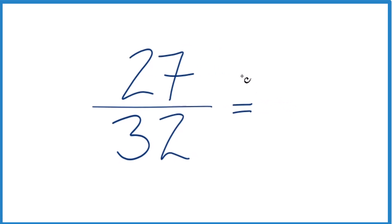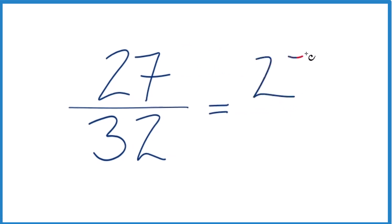If we divide 27 by 1, we get 27. 32 divided by 1, that's 32. And we get what we started with.